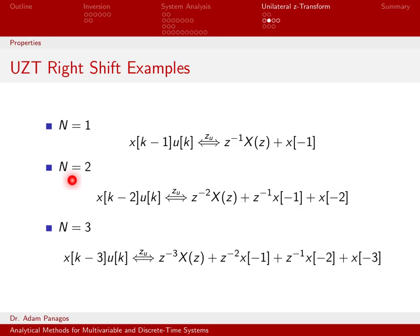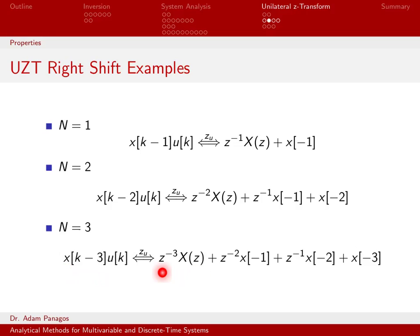What about when I shift to the right by 2? So if I have x of k minus 2, but it's still limited starting at time 0. I write down X(z), multiply by z to the negative 2, and now I have to tack on two values to account for those two values that popped into positive time: z to the negative 1 times x at time minus 1, plus x of minus 2. And for n equals 3, I have X(z) times z to the negative 3, and then three values. You can see the pattern — z to the negative 2 times x at minus 1, z to the negative 1 times x at minus 2, and x of minus 3. These exponents always add up to negative 3.